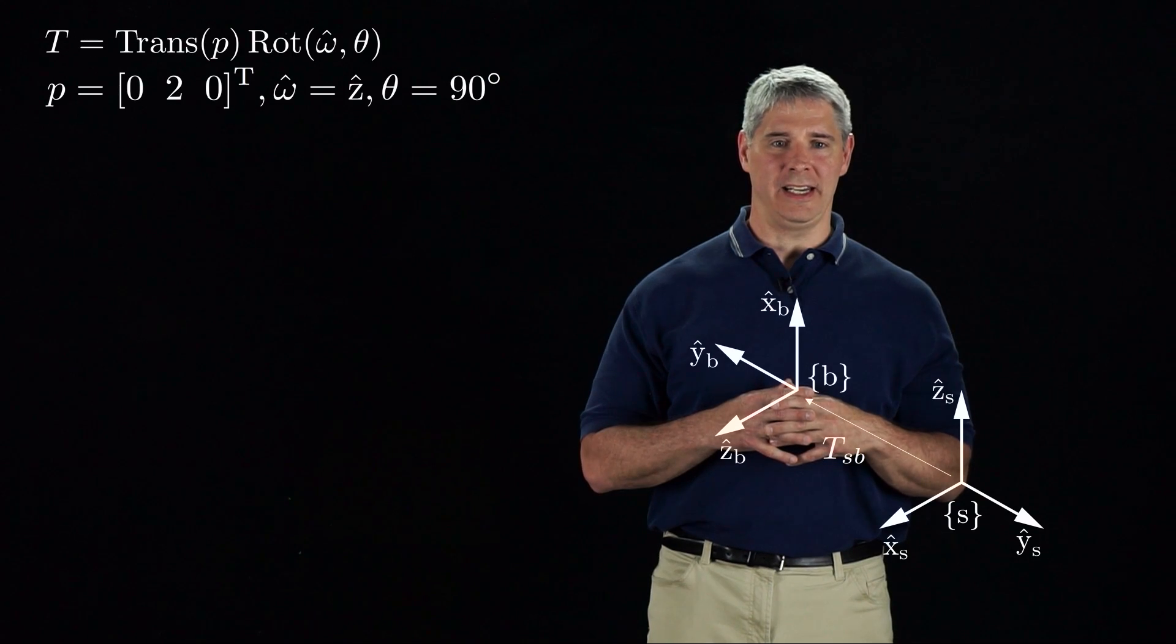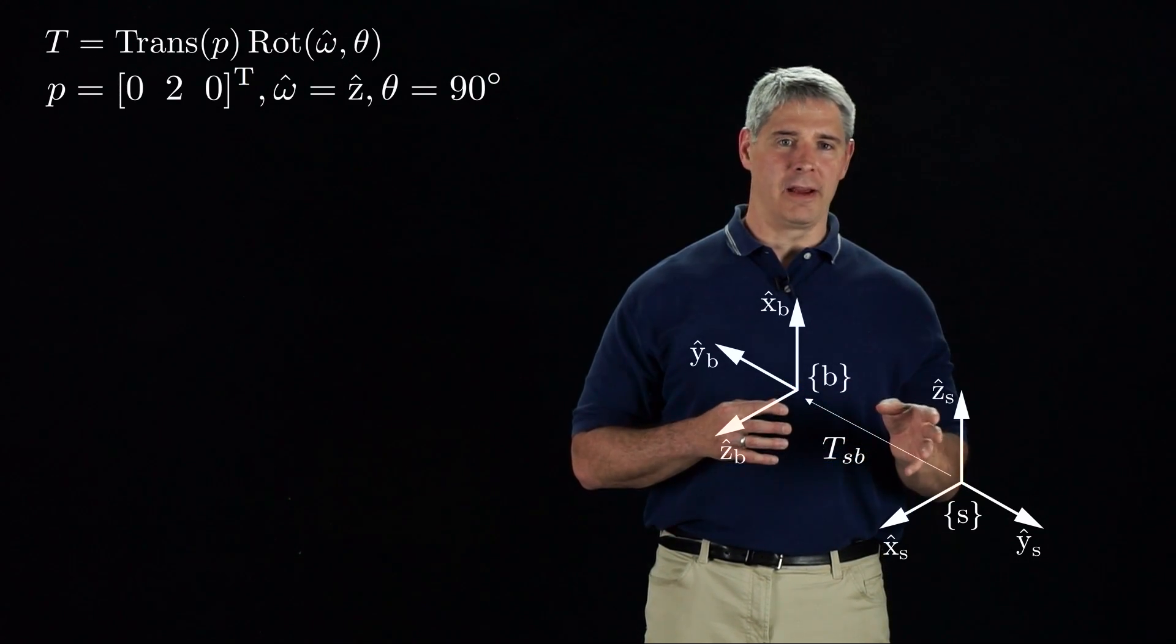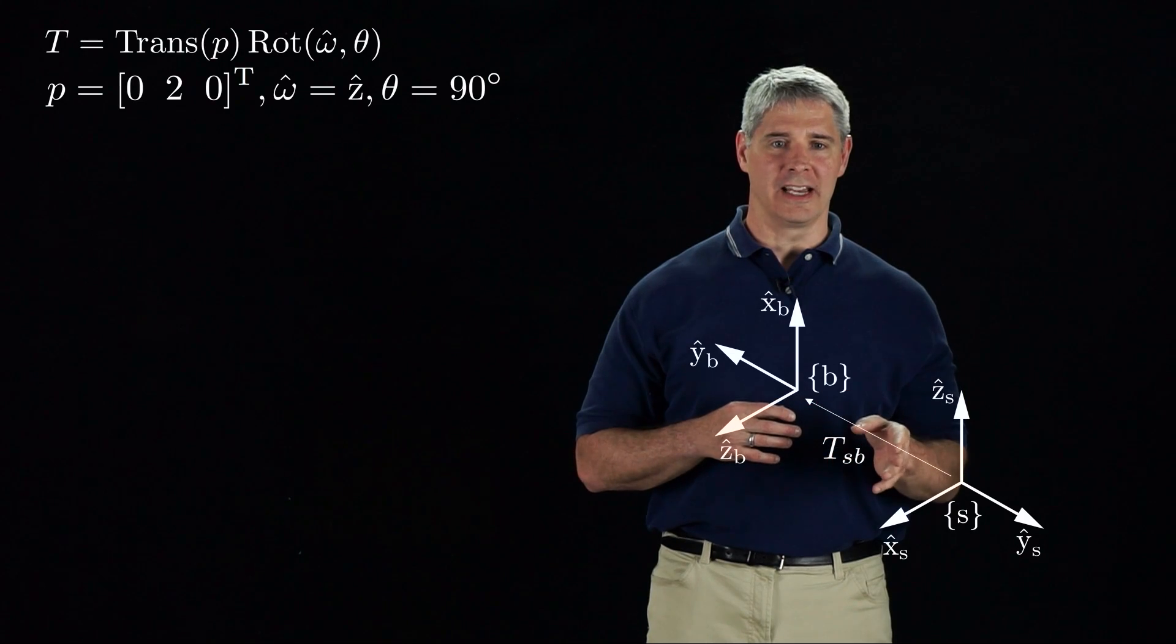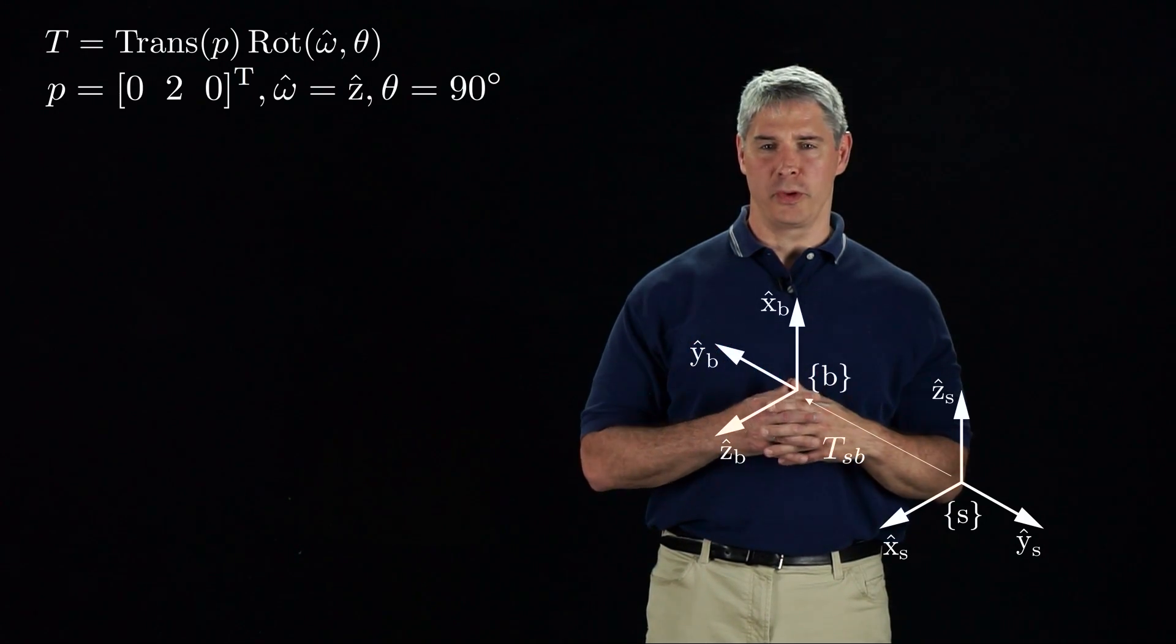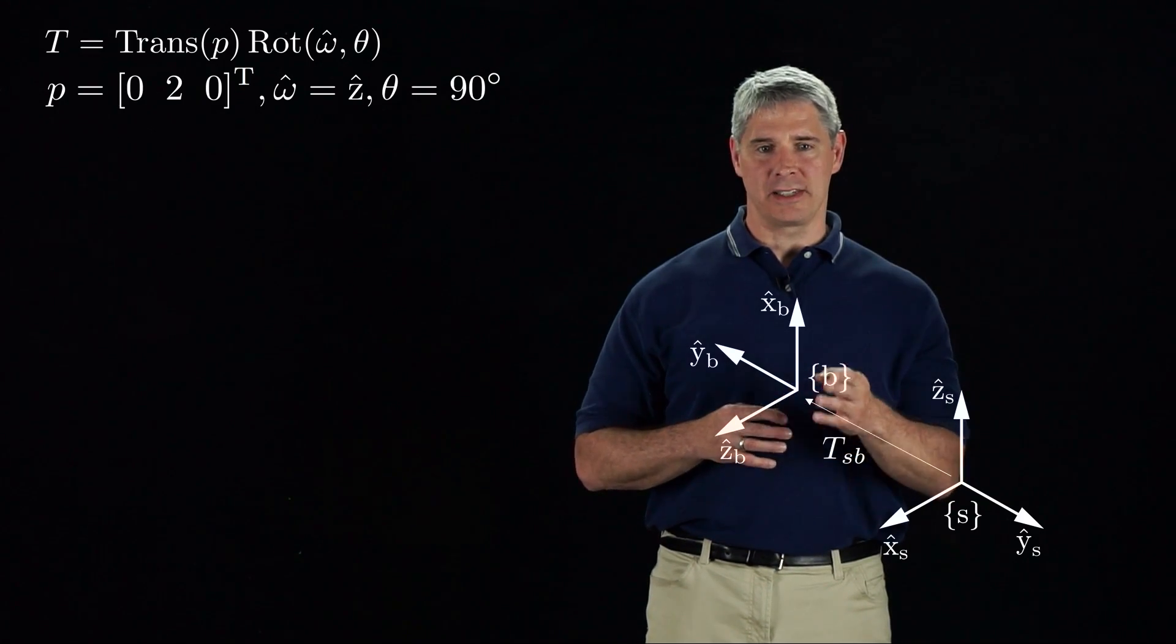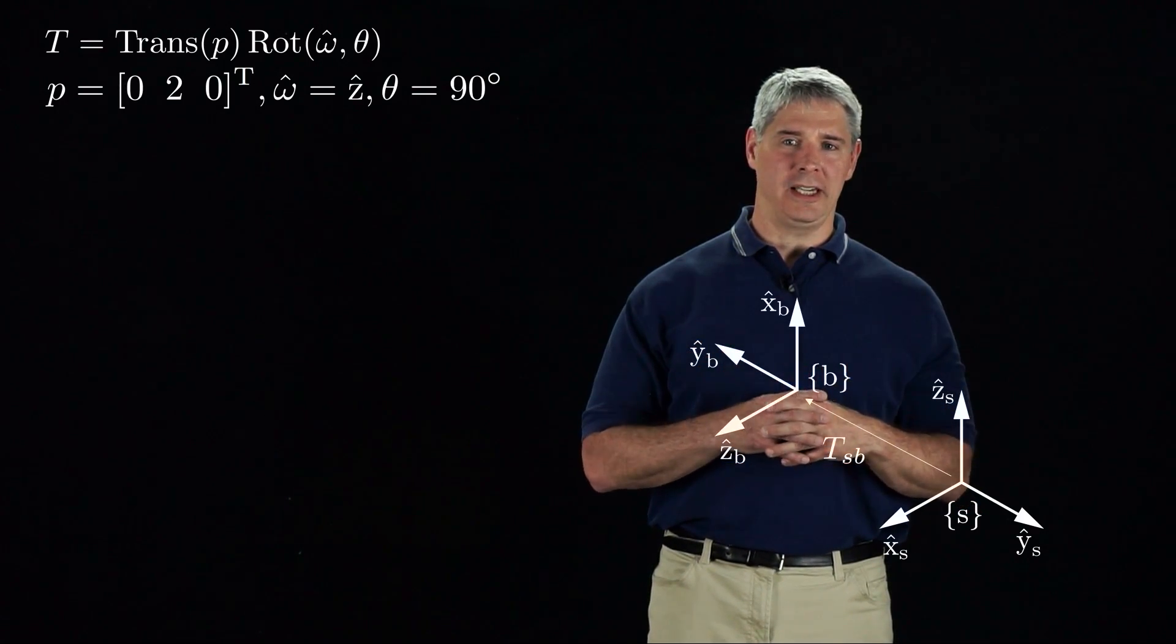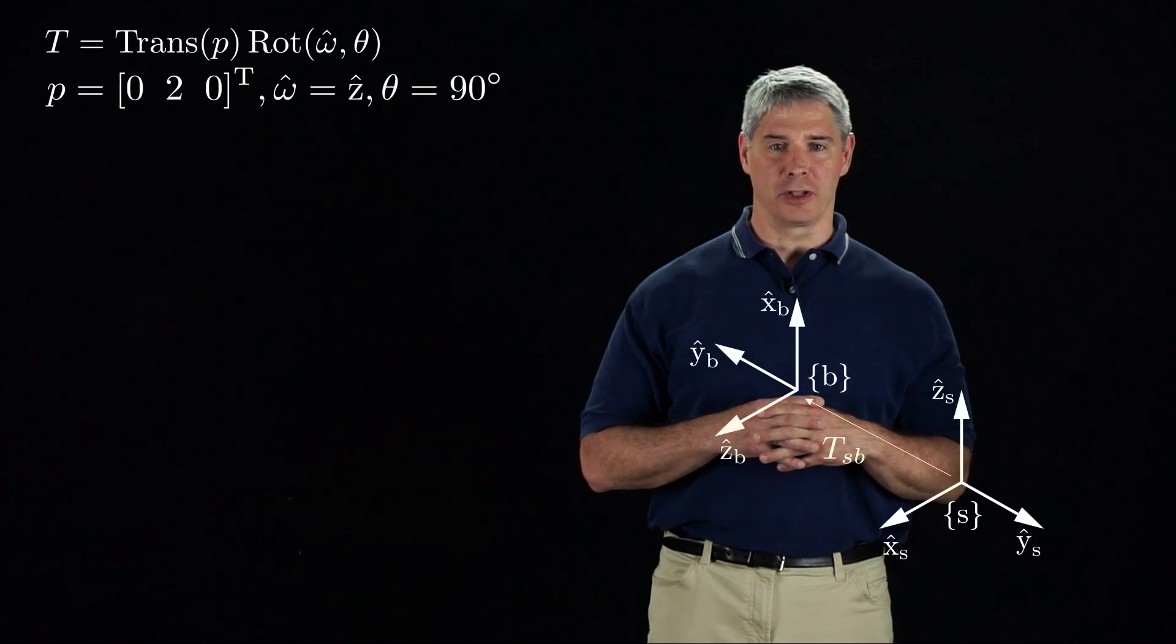We will use the transformation T to move the B-frame relative to the S-frame. The B-frame is initially represented by TSB. Since we have two frames, we need to know whether the transformation vectors P and omega-hat are expressed in the B-frame or the S-frame. The answer depends on whether T right-multiplies or left-multiplies TSB.